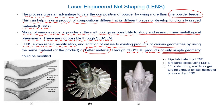On your screen you can see a variety of LENS-processed products. The first is hip implants processed using LENS. The second shows repaired blisks — mechanical components repaired using the LENS process. The third is a 1/6th scale mixing nozzle for a gas turbine developed using LENS process for a Bell helicopter application.